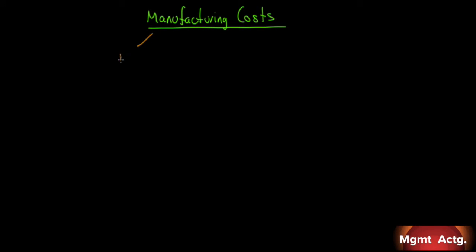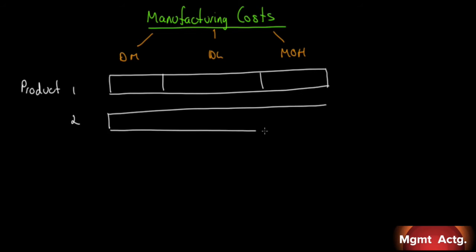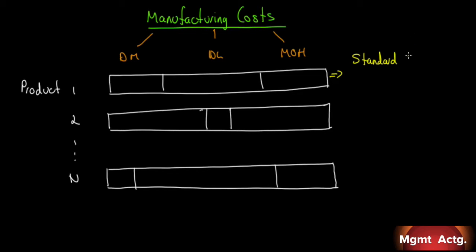Let's look at our manufacturing costs again. We have three manufacturing costs: direct materials, direct labor, and manufacturing overhead — both a variable and fixed component. For every product we have, there will be a standard for all three inputs: a material standard, a labor standard, and an overhead standard. Product two will have its own set of standards — it may require more raw materials, very little labor, and more overhead. And other products may have very little raw materials, a huge amount of labor, and very little overhead. For each product, there will be what's called a standard cost record.